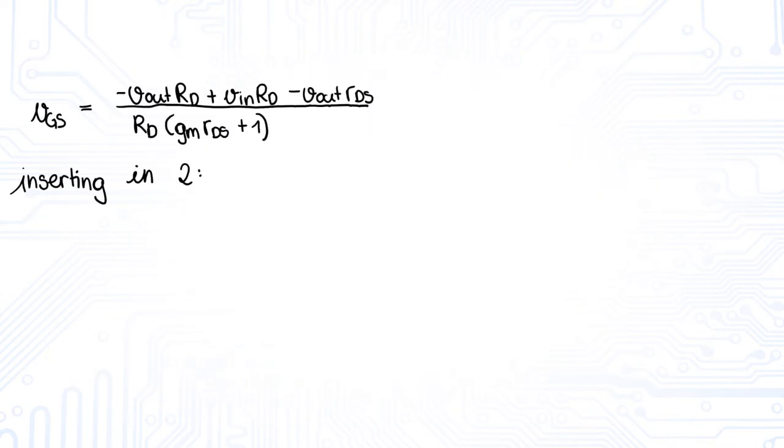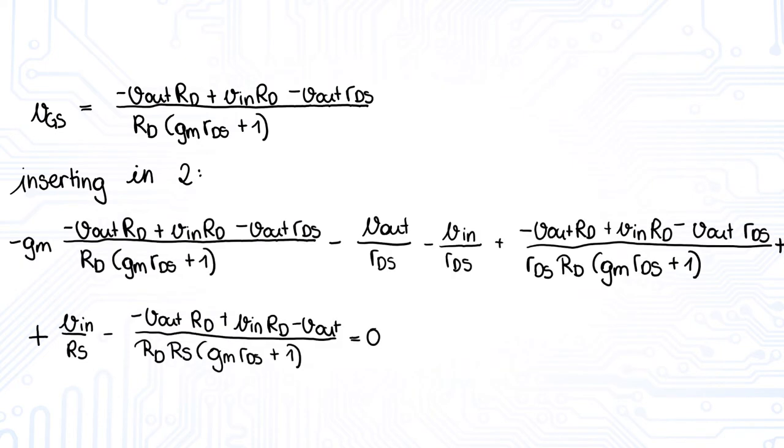Then we insert this equation in equation 2 and get a very long term. Now we got the term where, apart from VIN and VOUT, no unknown currents or voltages occur anymore. So we can sort this equation by VIN and VOUT to be able to calculate the ratio of VOUT to VIN.